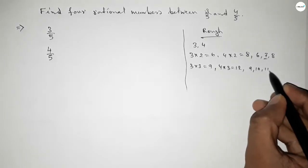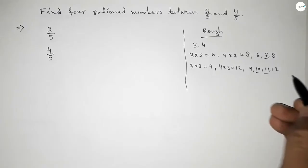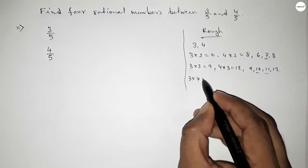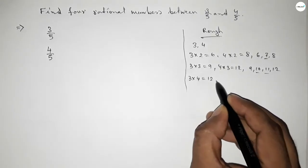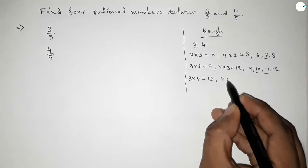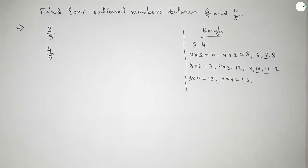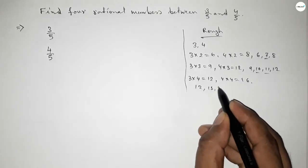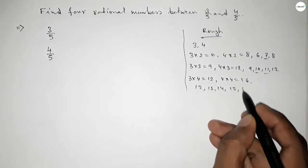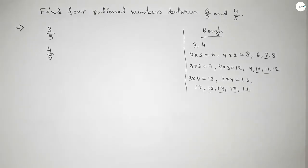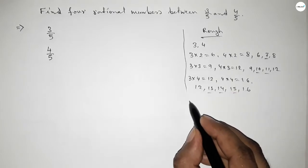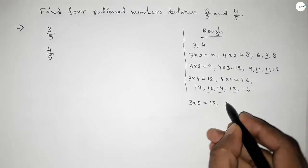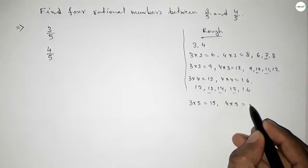If we multiply by 3, we get 9 and 12. Between 9 and 12 we can get two natural numbers — 10 and 11 — but we need four rational numbers. If we check by multiplying by 4, we get 12 and 16. Between 12 and 16 we can get only three natural numbers, but we need four.